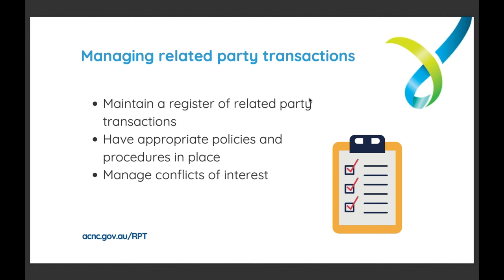In our vehicle example, the board member should identify their conflict of interest and notify the rest of the board straight away. The conflict should be recorded and the charity's conflict of interest policy followed — this may require the board member to excuse themselves when a decision is made about the purchase. To ensure the purchase is in the charity's best interest, the board should conduct due diligence, such as seeking quotes for similar vehicles. If the charity proceeds, all details must be recorded in the Register of Related Party Transactions. More details and resources are available at acnc.gov.au/rpt.